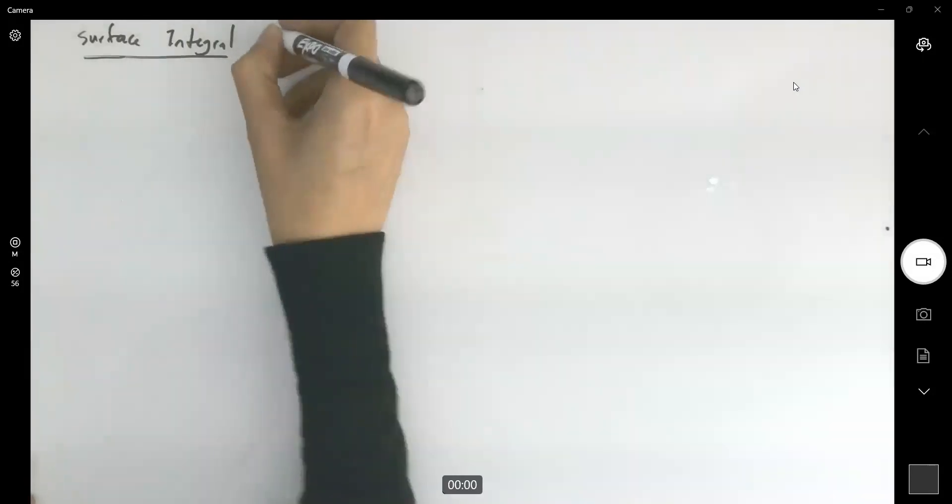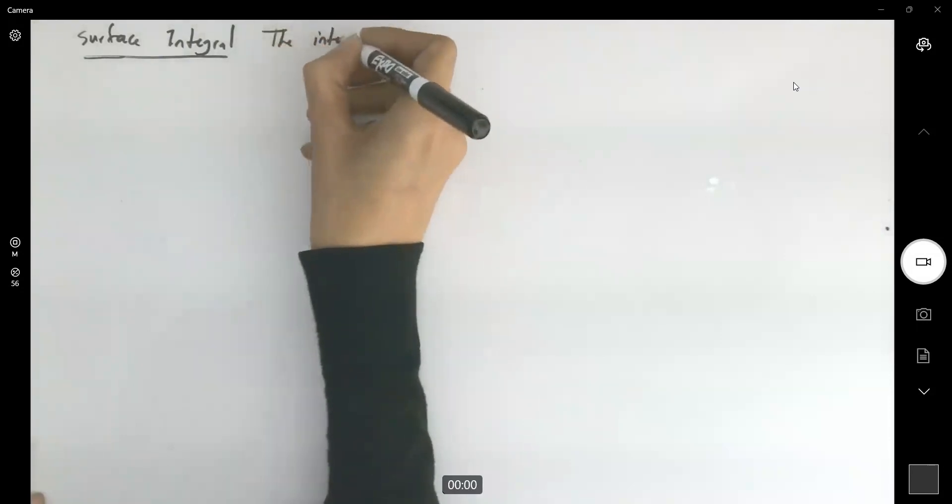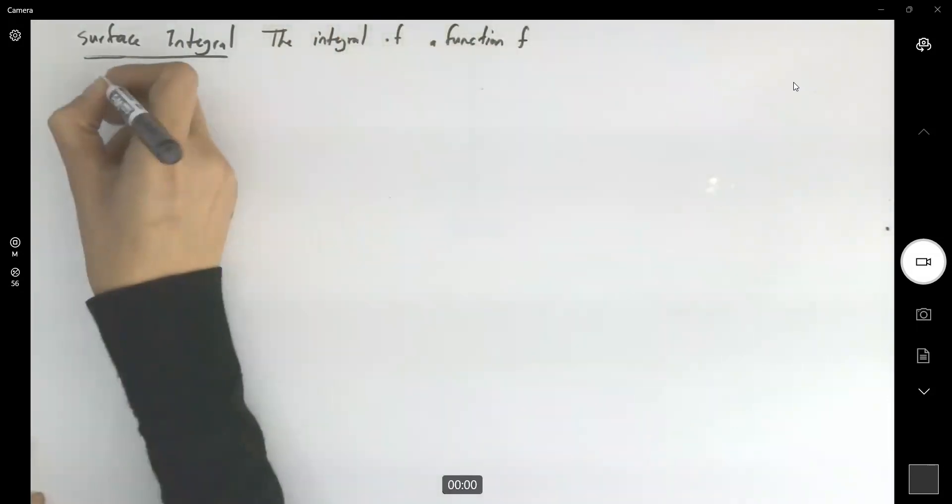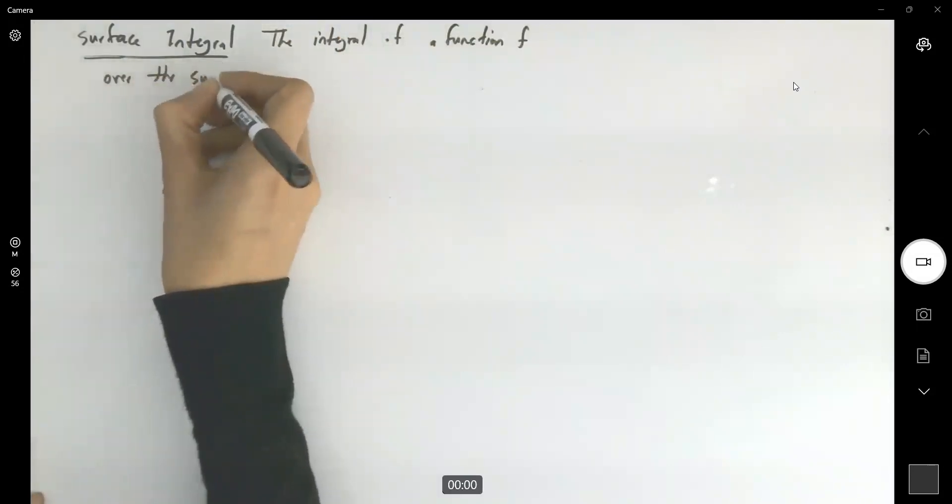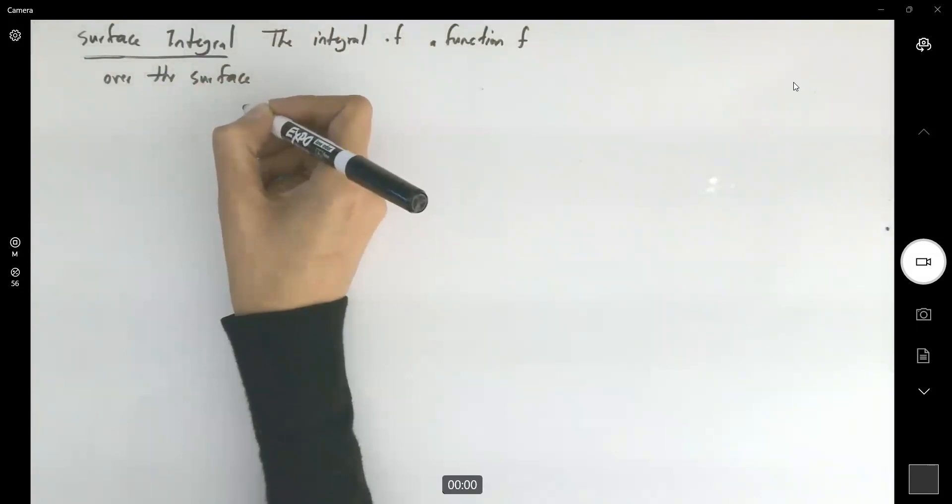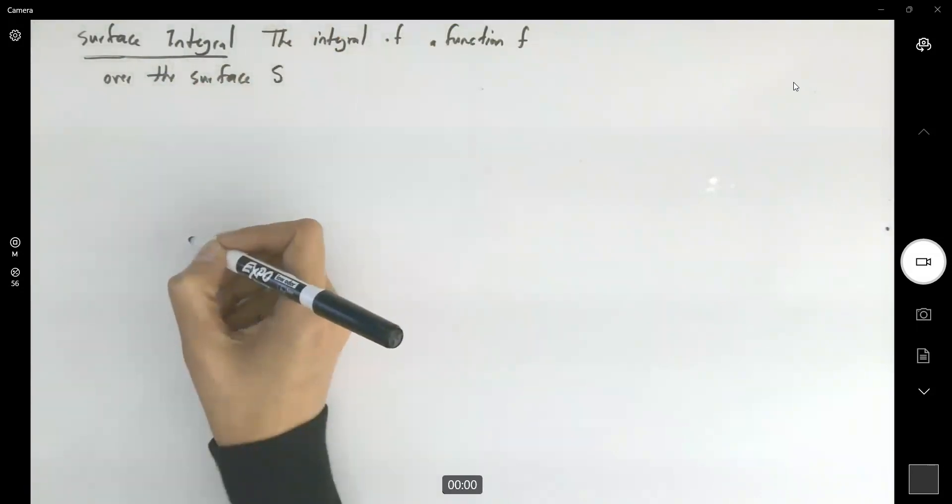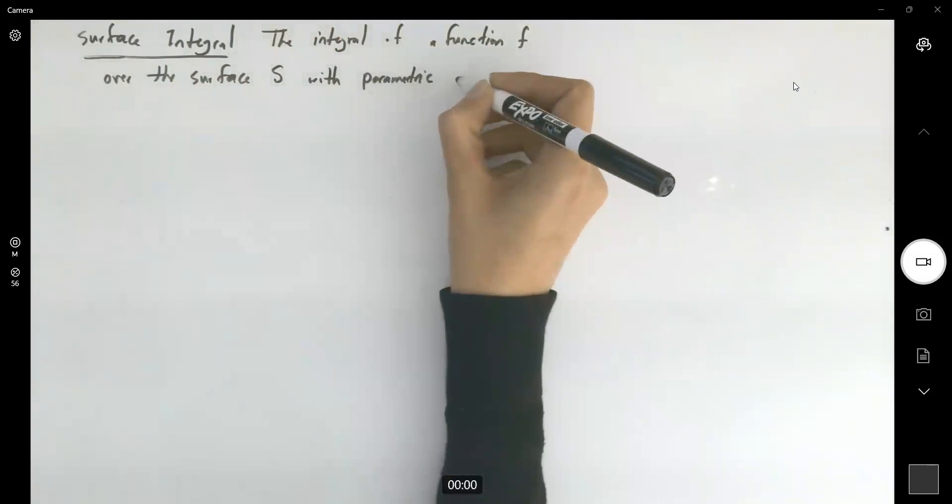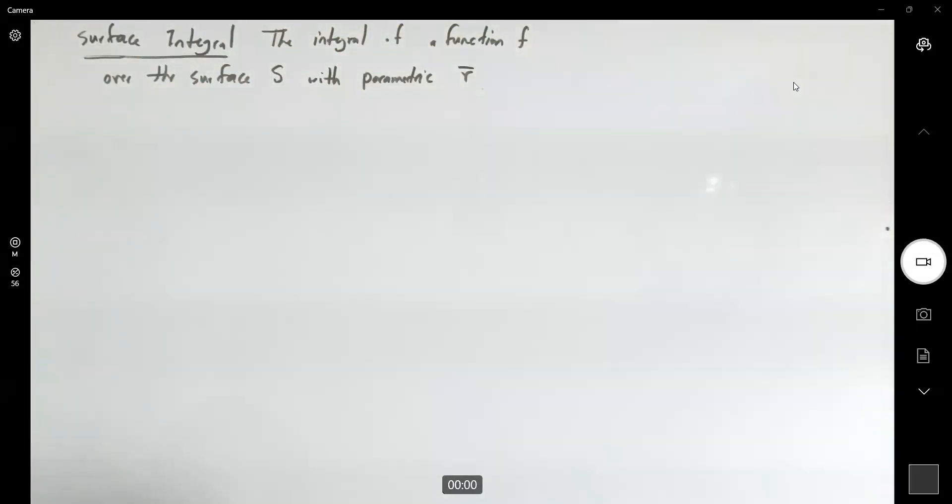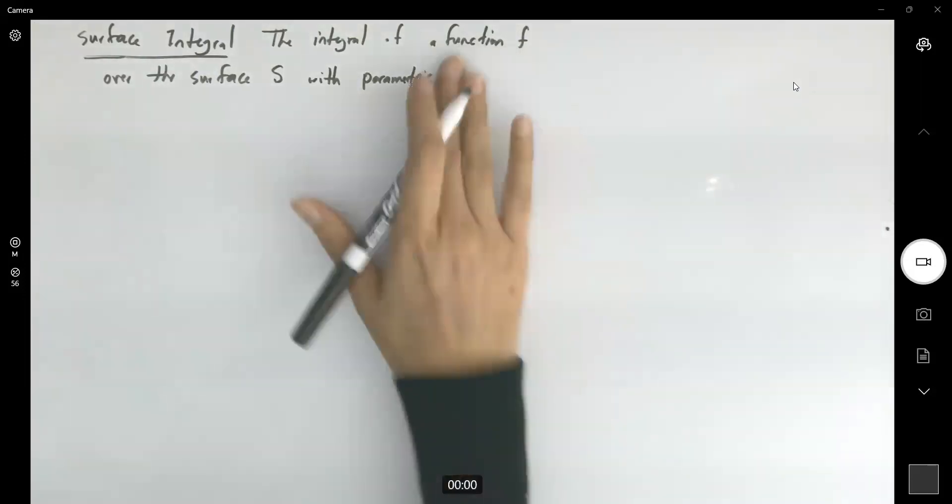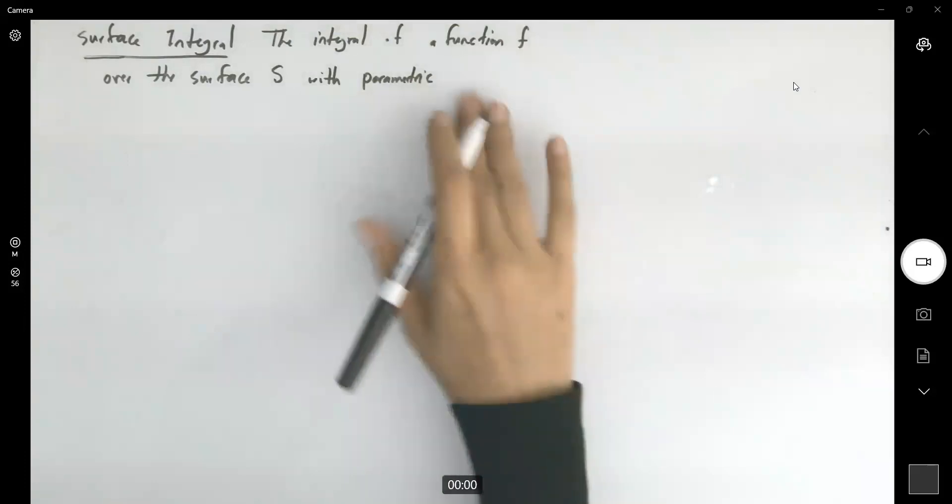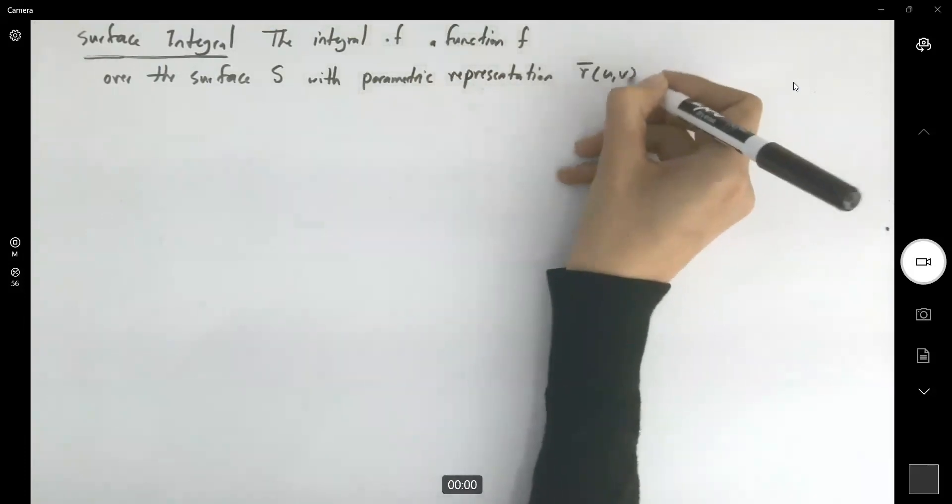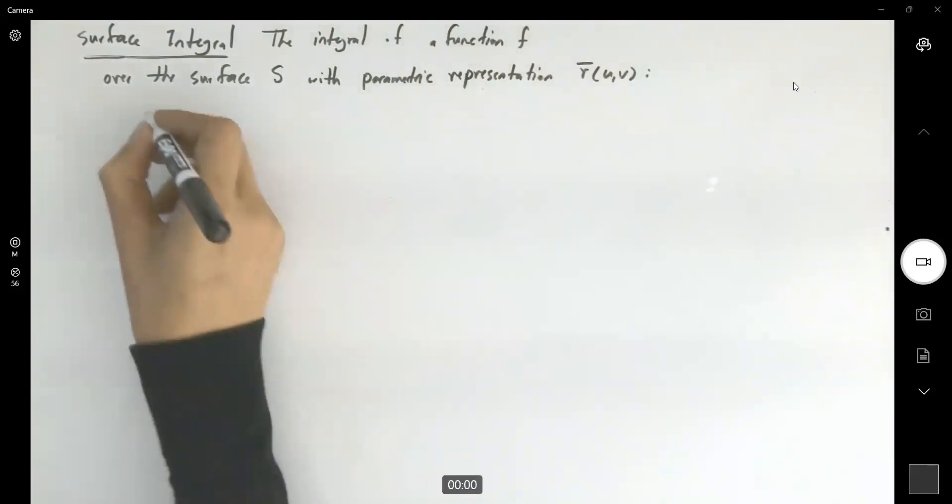The surface integral or the integral of a function like f over the surface is with parametric equation r, parametric representation r of u and v, can be found using a double integral.